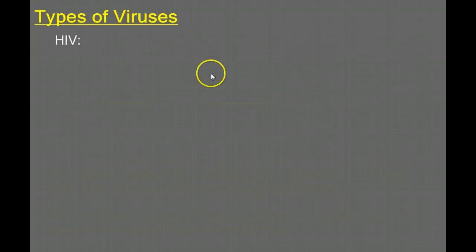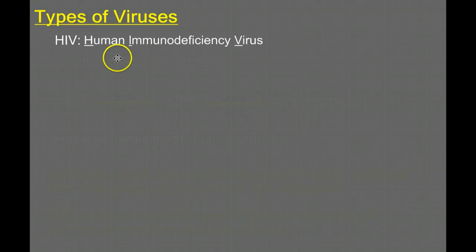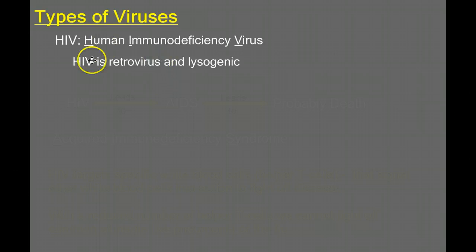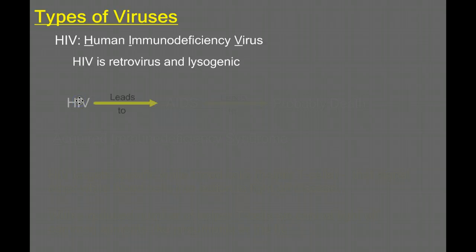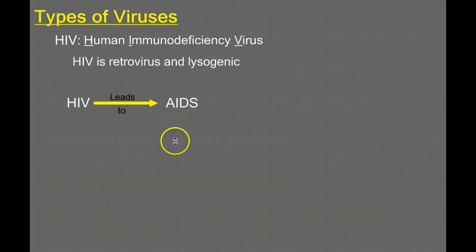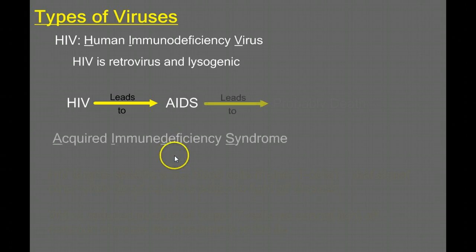Let's talk more specifically about HIV. HIV stands for human immunodeficiency virus. Interestingly, HIV is a retrovirus — it's an RNA core virus, and it's lysogenic. So it comes in as RNA, has to be converted to DNA, and then it hides out in the host cells for very long periods of time. The question is: why is HIV so bad? HIV by itself doesn't kill you — the HIV virus doesn't kill you, but HIV leads to AIDS: Acquired Immune Deficiency Syndrome.